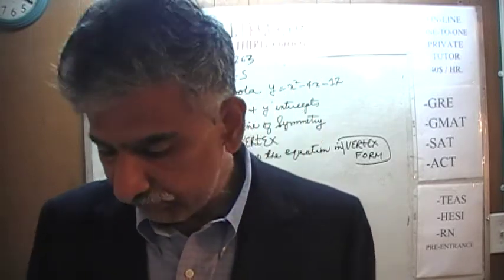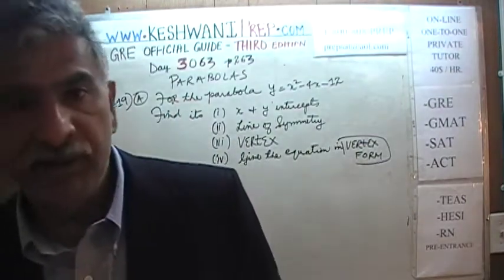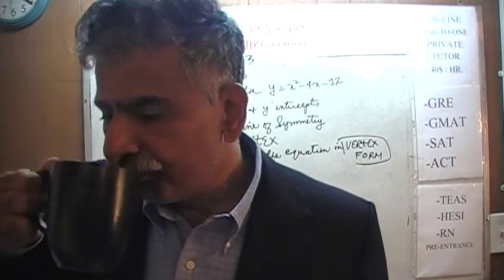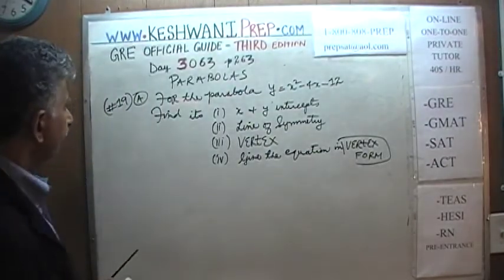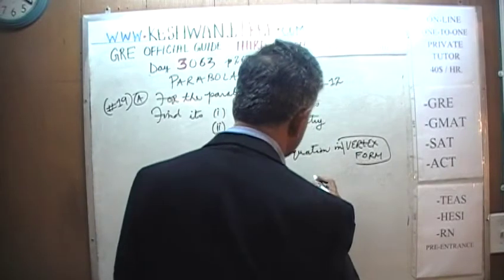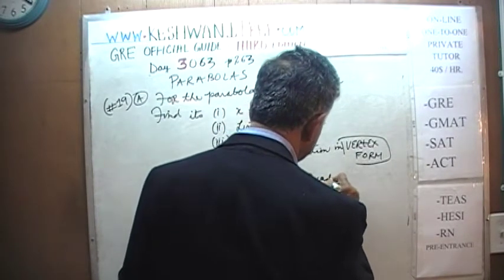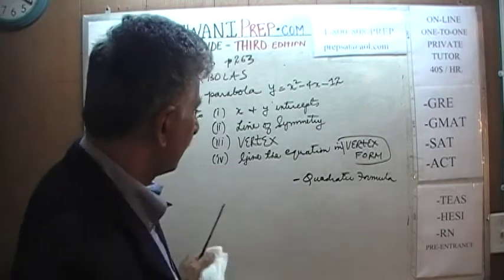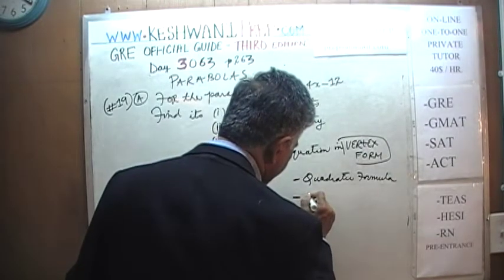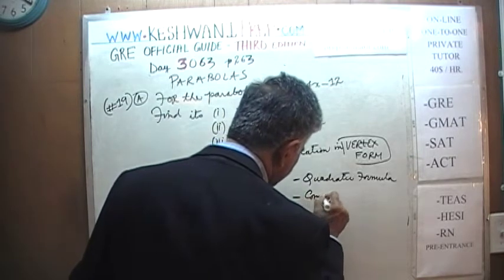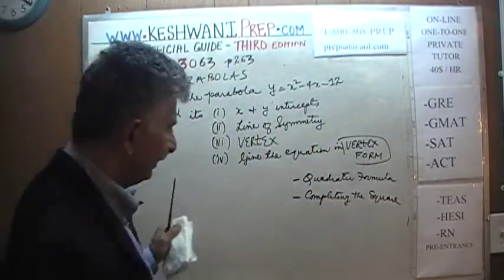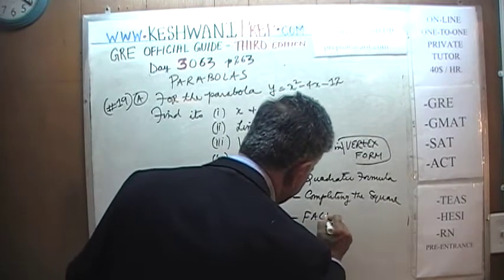A parabola's equation is a quadratic equation, and a quadratic equation can be solved by three different methods: the quadratic formula, completing the square, and factorization.